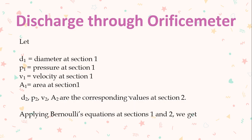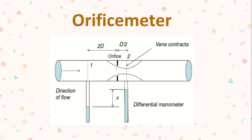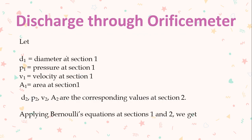Now let's derive the expression for discharge. We connect two sections: section one is just before the orifice where water enters the orifice plate, and section two is at the vena contracta. D1 is the diameter at section 1, which is the pipe diameter. V1 is the velocity at section 1, P1 is the pressure, and A1 is the cross-sectional area equal to π/4 × D1². Similarly, D2, P2, V2, and A2 are the corresponding values at section 2.